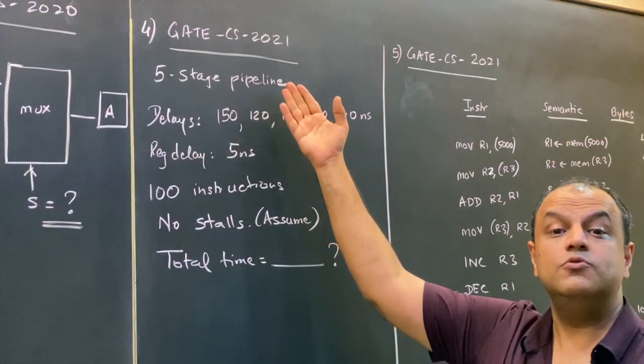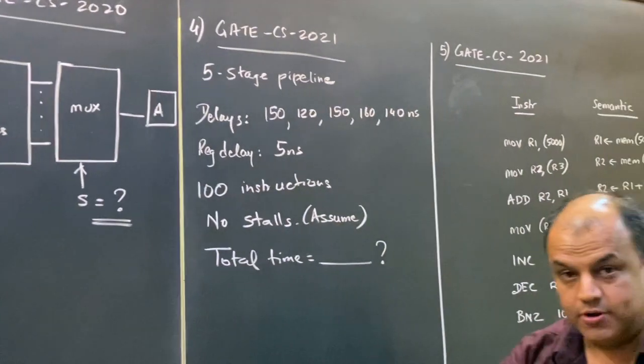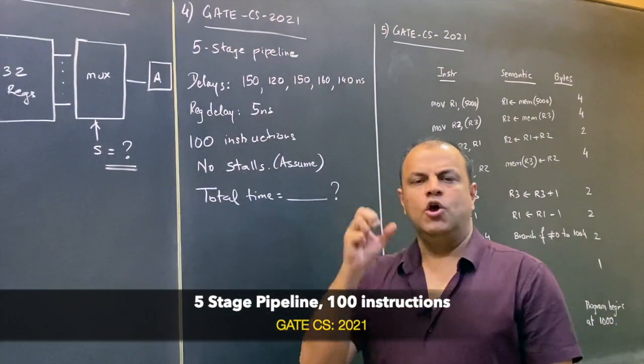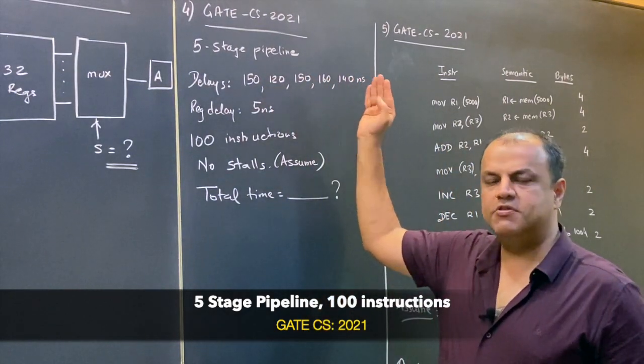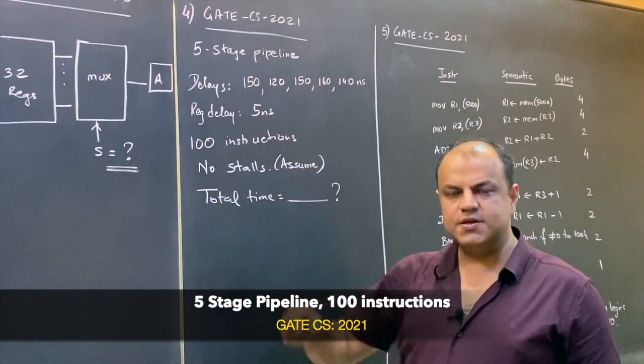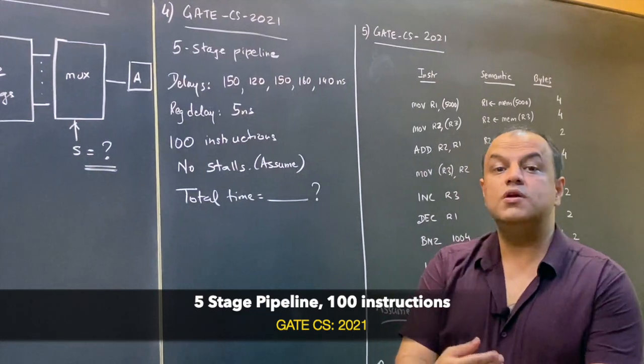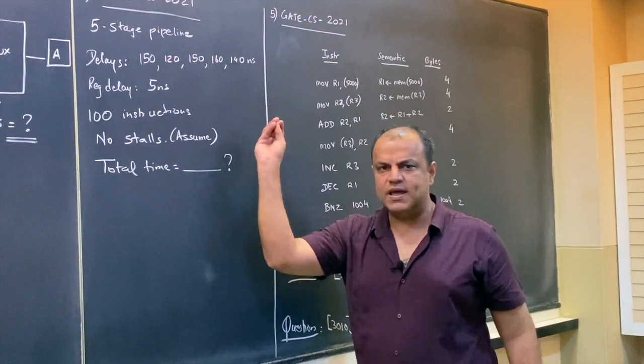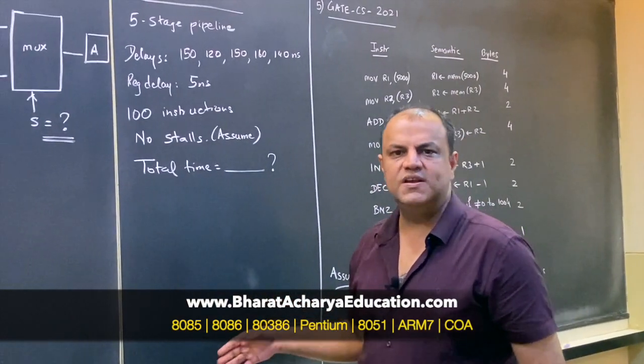This came in 2021, fresh out of the oven. It's a question based on pipelining—there's a five-stage pipeline. They've said what is the time required for every stage, the delay between stages, and the register delays. There are 100 instructions, so what is the total time required? It's straightforward—do the analysis, substitute in the formula, and you should solve this in less than 30 seconds.